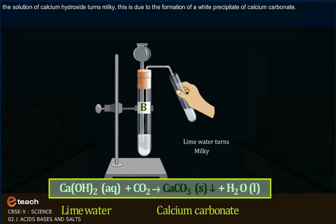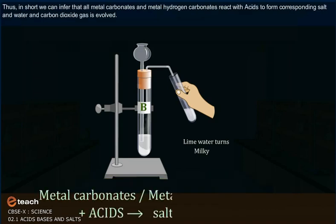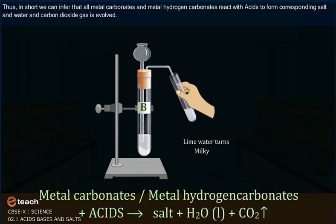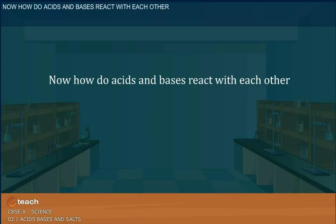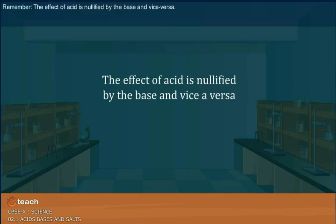In test tube B, sodium hydrogen carbonate reacts with hydrochloric acid to form sodium chloride, water, and carbon dioxide gas. When carbon dioxide is passed through lime water, it turns milky due to the formation of a white precipitate of calcium carbonate. We can thus infer that all metal carbonates and metal hydrogen carbonates react with acids to form the corresponding salts, water, and carbon dioxide gas.